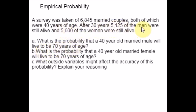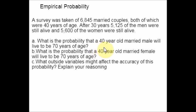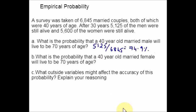For Part A, at age 40 they got married and after 30 years they would be 70. So the probability is 5125 divided by 6845, which gives approximately 0.749, or 74.9%. For these types of problems it is better to give the answer as a percentage.